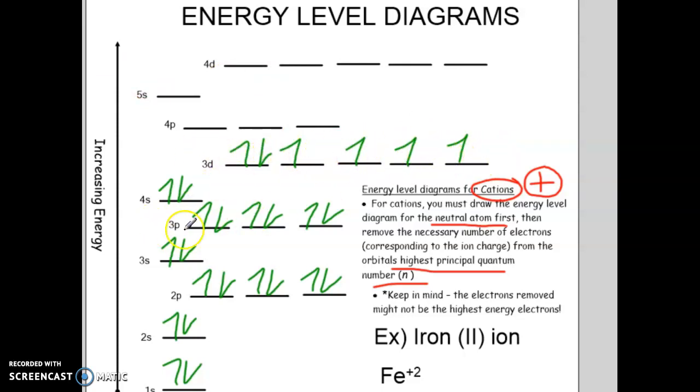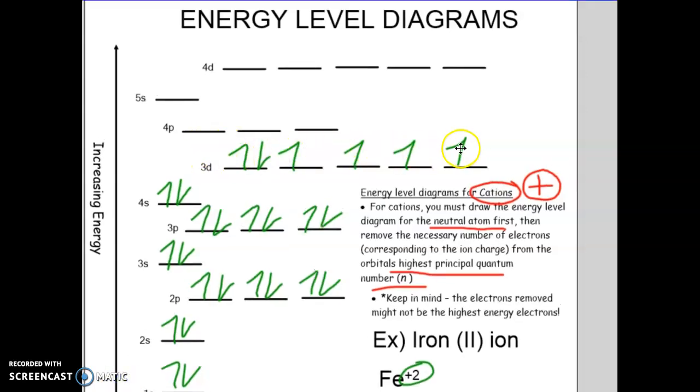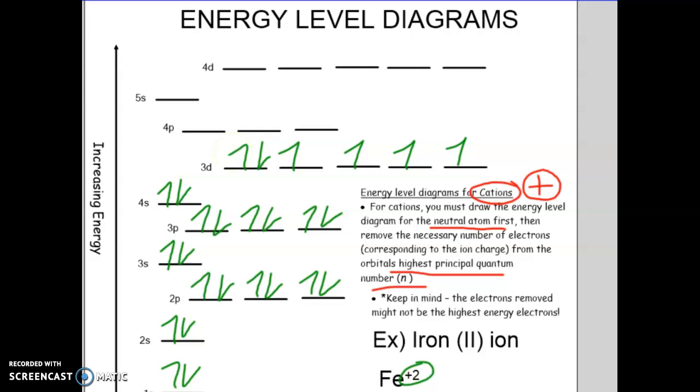You need one in each orbital before you can double up. So here is iron. So iron positive two means we are removing two electrons. Now, your natural place where you're going to feel like you want to remove from is going to be the 3d orbitals because it's the highest one. But remember that it was mentioned earlier that when you get into larger energy levels, your natural instinct is going to be to remove from the highest level. But remember, you have to remove from the highest n number.